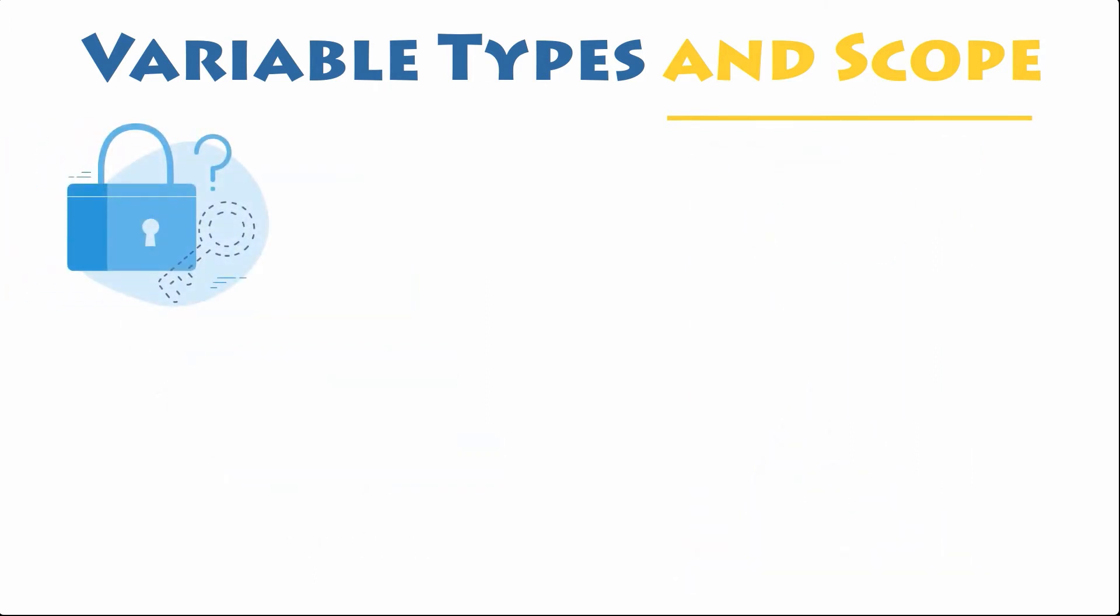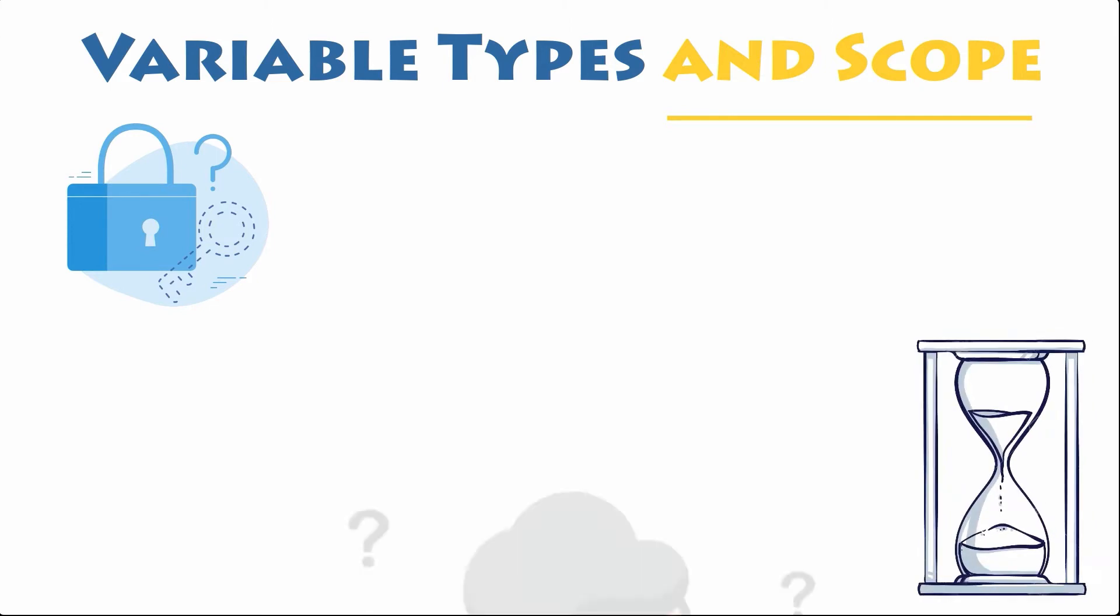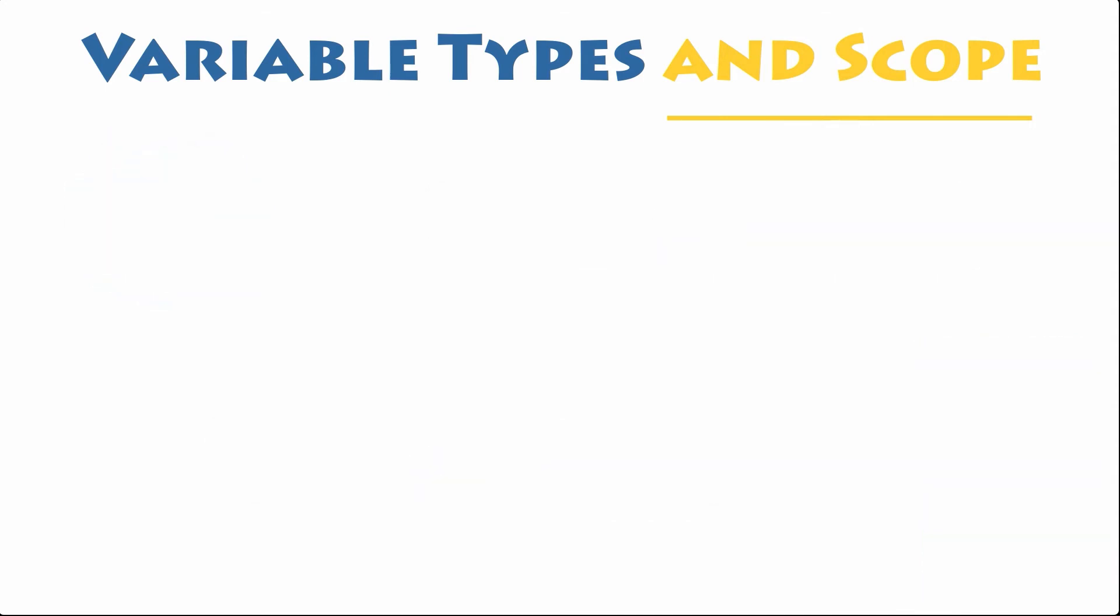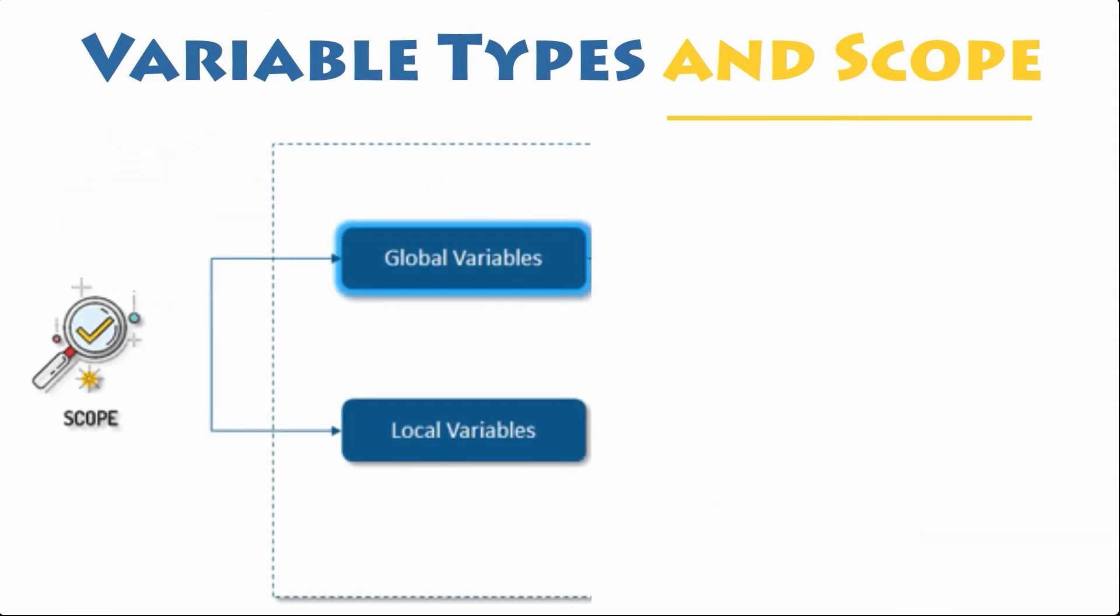Where a variable is accessible and how long it exists depend on how it is defined. We call the part of a program where a variable is accessible its scope and the duration for which the variable exists its lifetime. Some variables are defined globally, others locally. This means that a variable referring to an entity in a certain part of a program may refer to something different in another part of the program, even at different points in time.